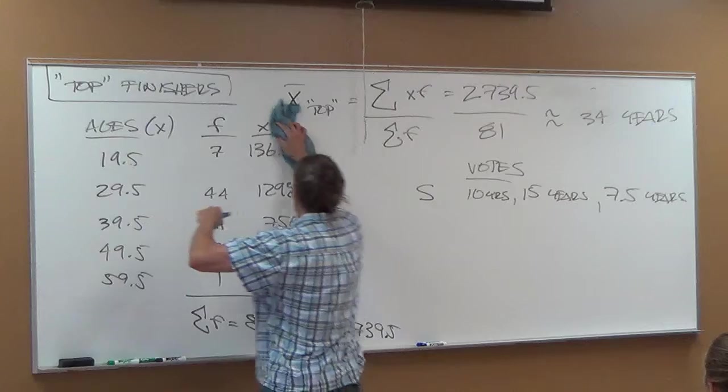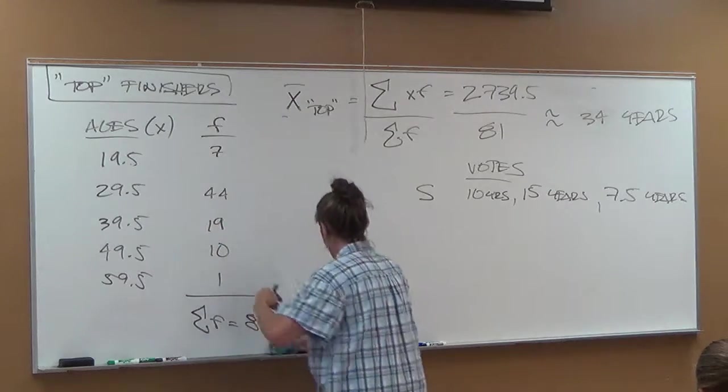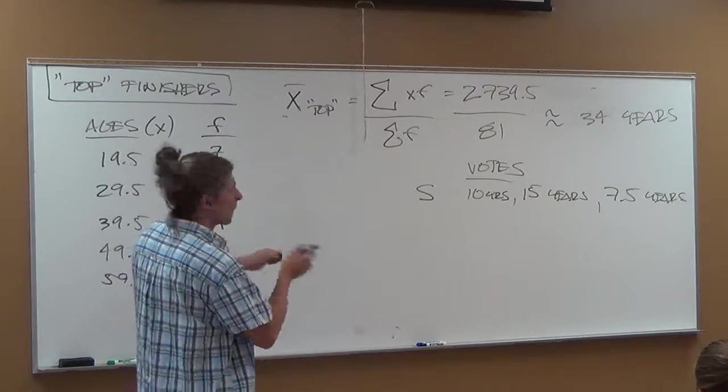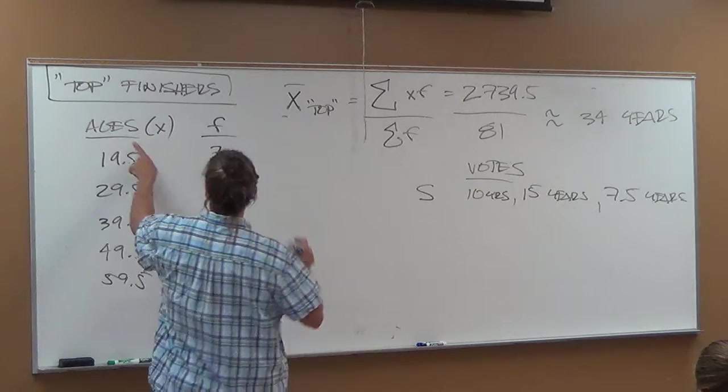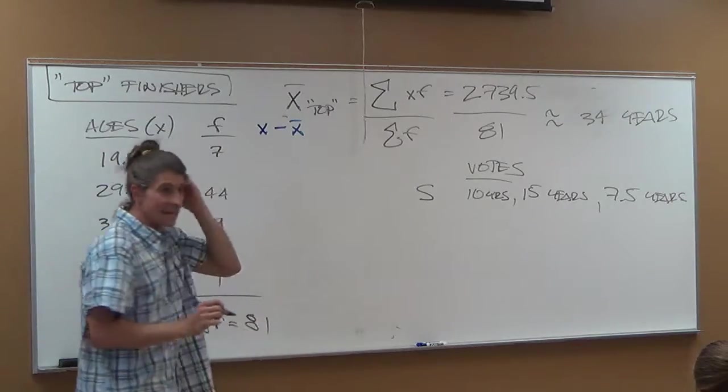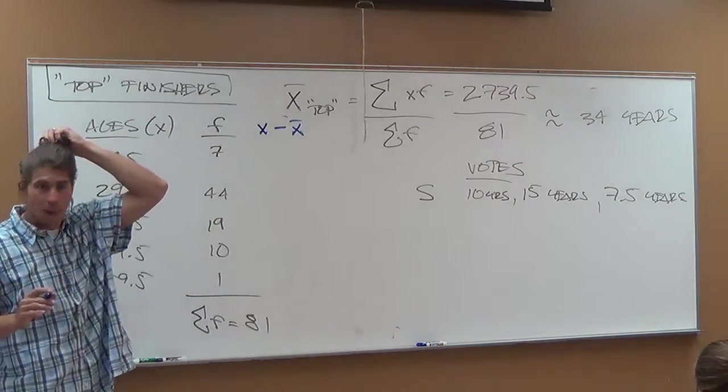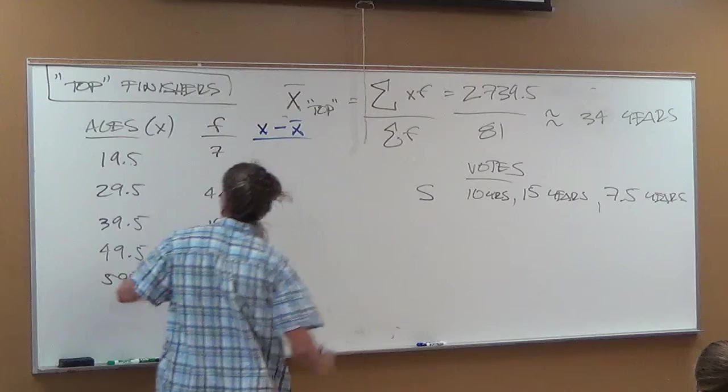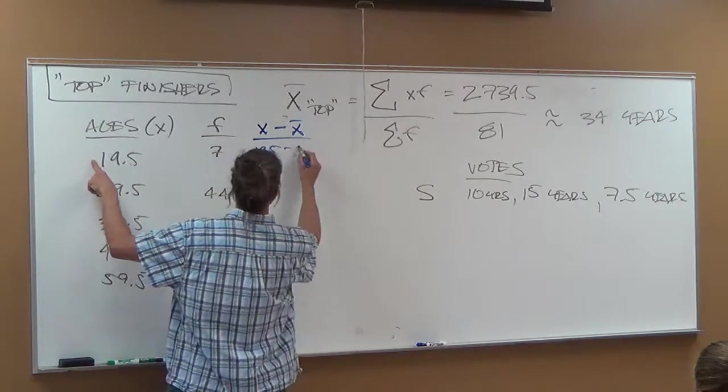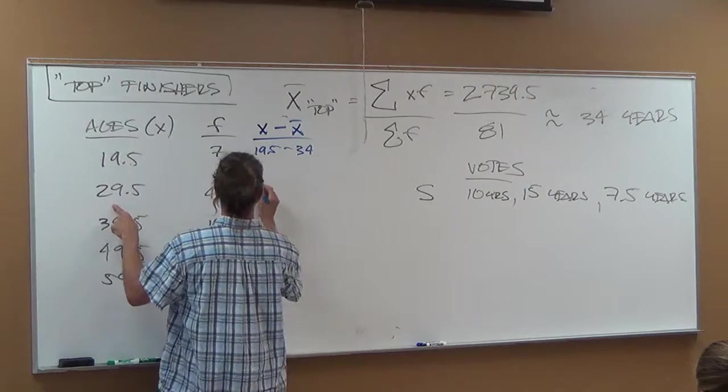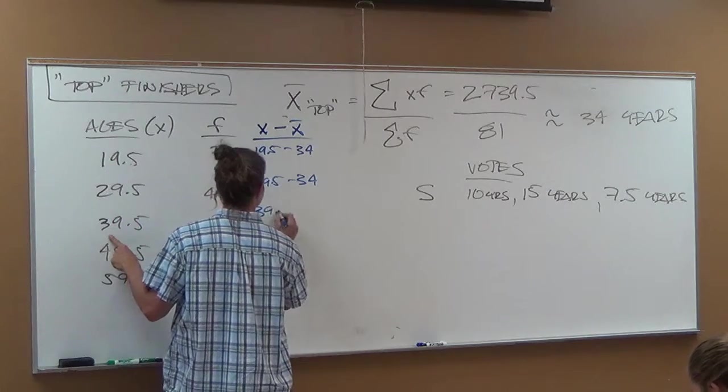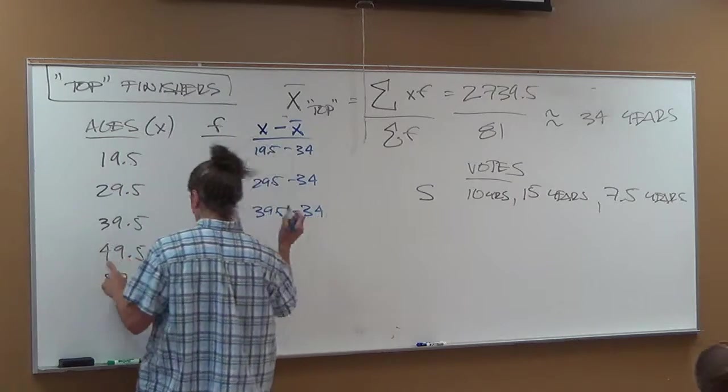Okay, we've got the average of 34 years. Let's take this out. Now, let's set it up kind of like we did with Bert's data where we take the data minus the average, because that is what we did. We had to do that for Bert and Ernie's, okay? So we do 19.5 minus the average of 34. We do 29.5 minus the average of 34. We do 39.5 minus the average and so forth and so on.